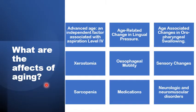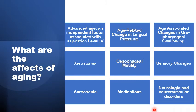Age is an independent factor in the development of pharyngeal dysphagia and aspiration. It can also act indirectly by inducing changes in the lingual pressure, xerostomia, oesophageal motility, sensory changes, sarcopenia of the muscles involved in the swallowing mechanism, the various medications taken more by the elderly, and various neurological problems.